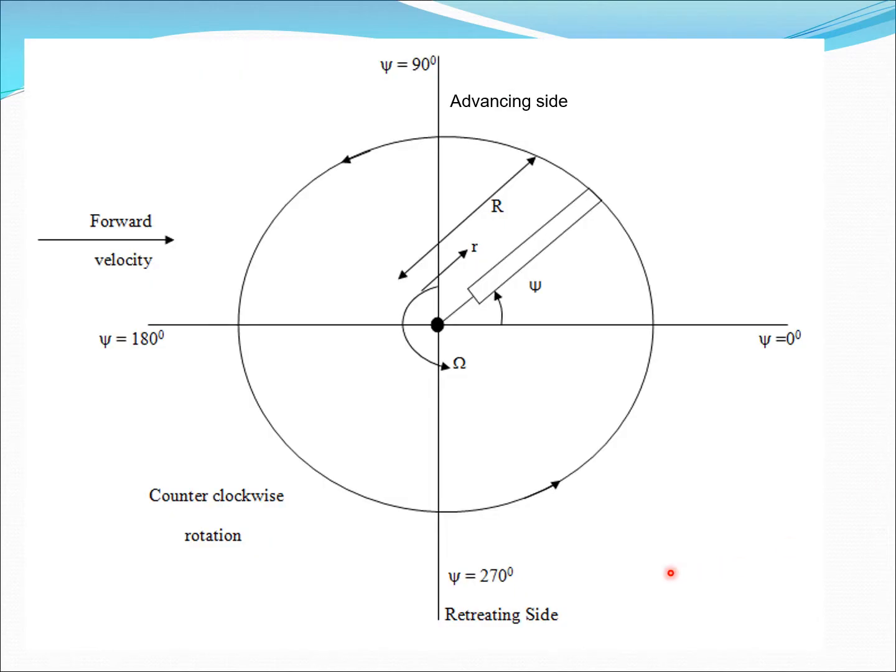This is the pictorial view of a main rotor from the top. Here you see some of the definitions. We take the forward velocity to act in this direction, and at this point we have the angle psi equals 180. So psi is the angle which essentially defines the location around the rotor disc. Psi is zero here, 90 degrees here on the advancing side, 180 degrees where the forward velocity is coming, and 270 degrees on the retreating side.